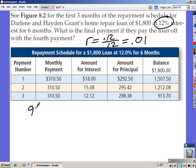Take 913.70 times 0.01. You should end up with $9.14 in interest. That's going to be your interest for the fourth month.